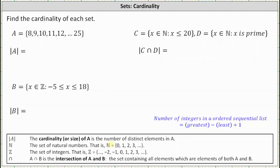So looking at set A, the cardinality is equal to the number of elements in the set. We could count them one by one, but let's look at a formula we can use when we have a set that consists of an ordered sequential list of integers. The number of integers in an ordered sequential list is equal to the greatest value minus the least value plus one.